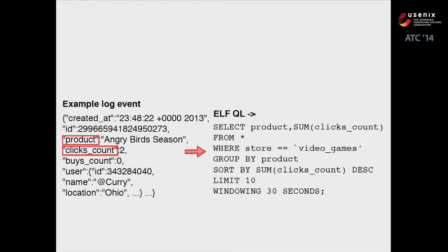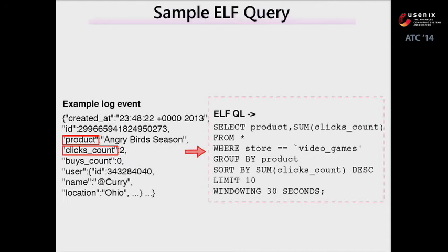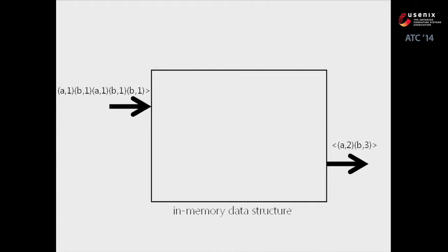Here is a simple example. On the left are logs in JSON format. On the right is the ELF query language, which is similar to SQL, used to define how logs should be parsed into key-value pairs. This example is about micro-promotion. Each line of logs will be parsed into product key-value pairs. These key-value pairs will then be pre-reduced by the Compiler Buffer Tree in memory—for example, raw pairs like A1, B1, A1, B1, B1 are compressed into pre-reduced results captured by the CBT.